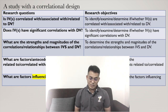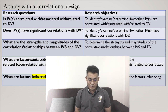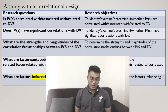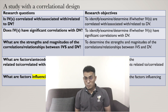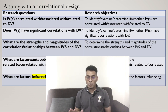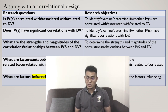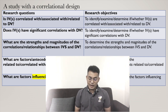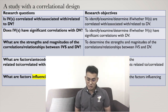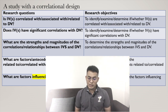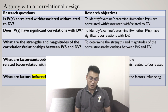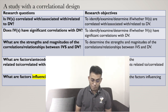The second research question is: does independent variable have significant correlation with dependent variable? You can choose one dependent variable or two independent variables — it's up to you depending on the design. And the research objective is: to identify, examine, or determine if or whether independent variable has significant correlation with dependent variable.